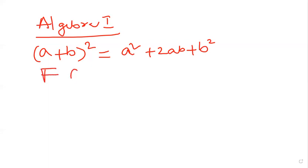There is an easier method called FOIL, which is First, Outer, Inner, and Last. What does that mean?